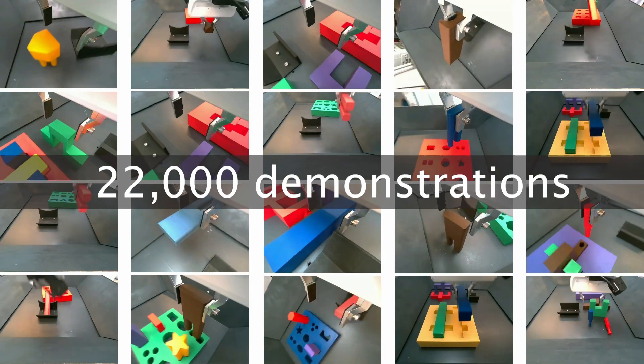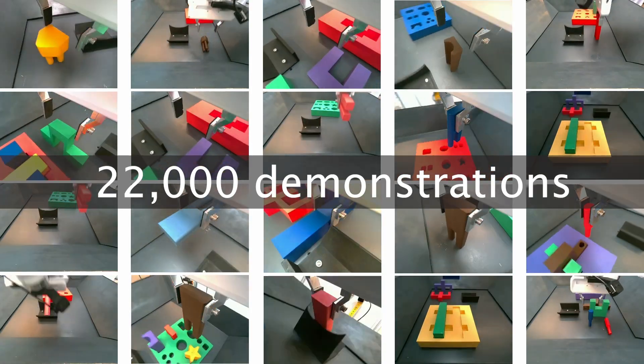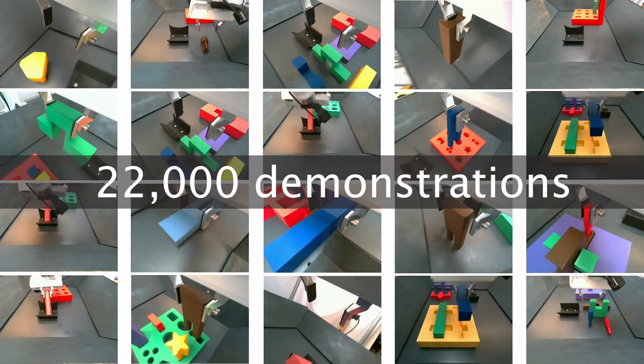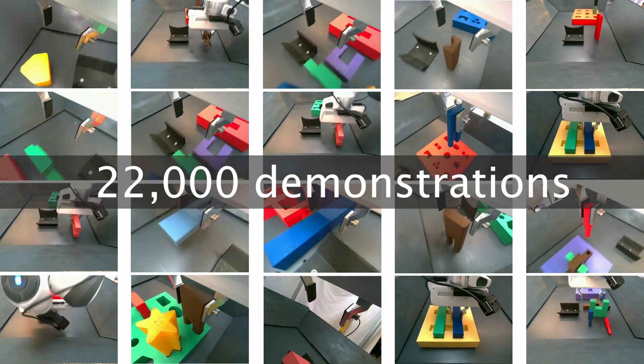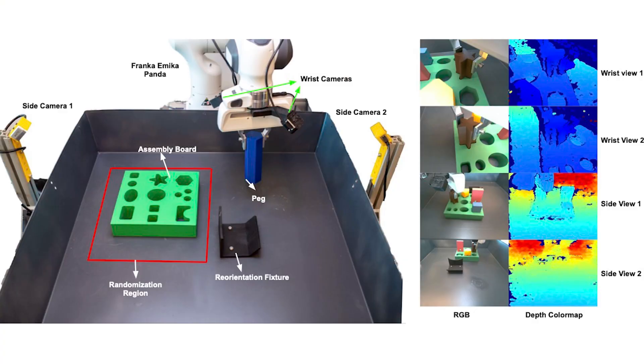Along with the tasks and objects, we collect and open source a large-scale demonstration dataset with 22,000 trajectories for the various manipulation skills in each task. The dataset is collected on a Franka arm from two global cameras and two wrist-mounted cameras. Each camera records RGB and depth information.